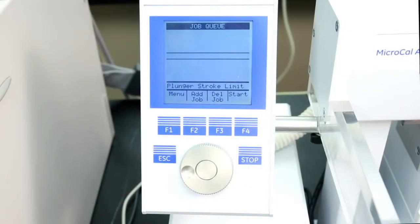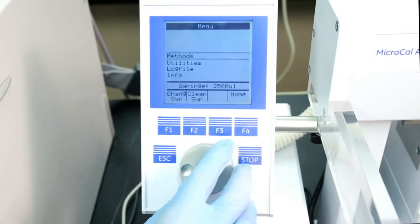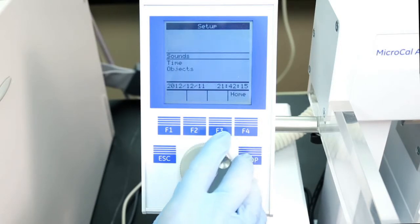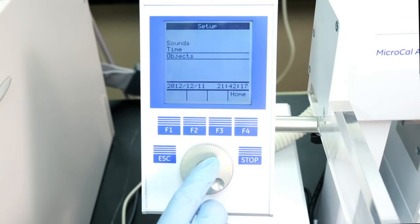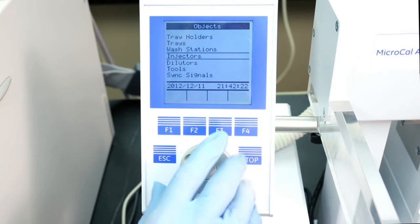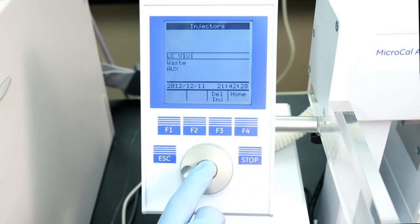Using the accessory console for the autosampler, navigate to the menu by pressing F1, then toggle to setup, followed by objects, then go to injectors, and navigate to LC valve 1. Press Enter.